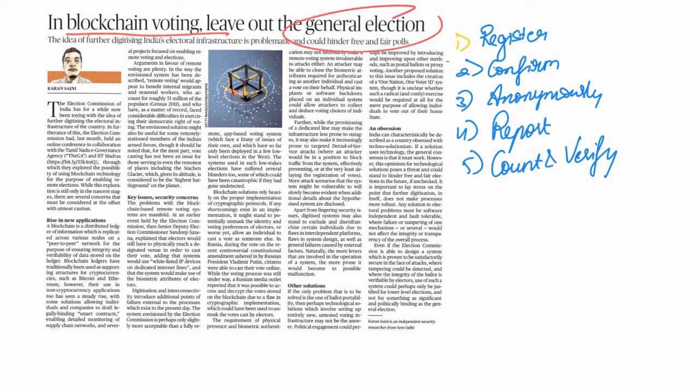In order to understand the various steps involved in taking voting online or electronically, there are certain key points. First, you have to register voters who are eligible to vote, then confirm the voter's identity, and anonymously and securely transmit the vote from voter to ballot box.